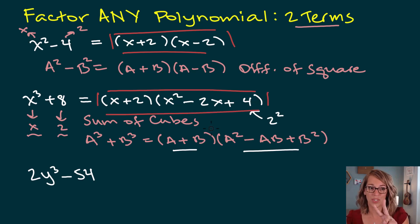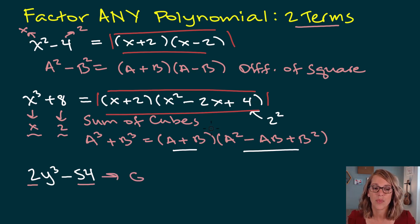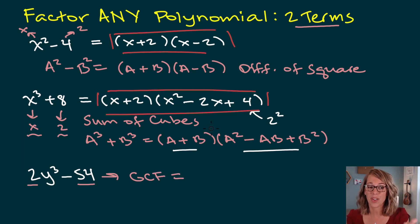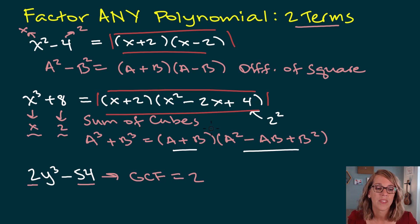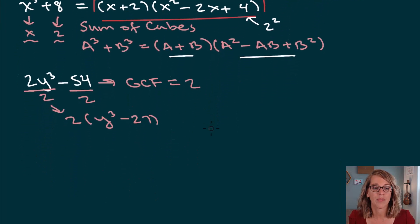We've got one more formula for two terms, and that is the difference of cubes. But for this one, the very first thing that we notice is that we've got this 2 out in front — 2 is not something cubed. 54 is also an even number. So the first thing I need to do here is to work with my greatest common factor. What goes into both of these terms? The coefficients are both even, so I can divide out a GCF of 2. The 2 comes out in front, and we're left with y cubed. 54 divided by 2 is 27, so we get minus 27.